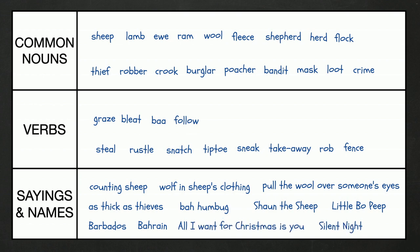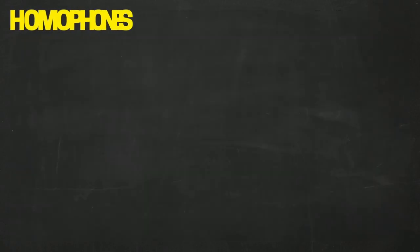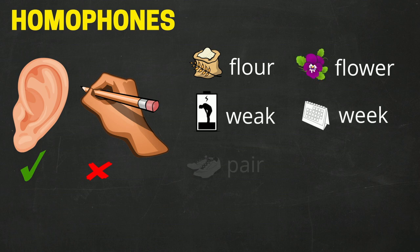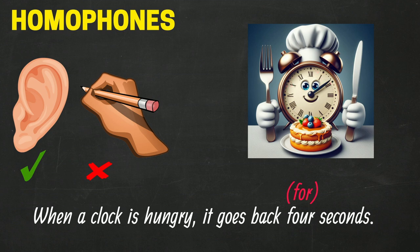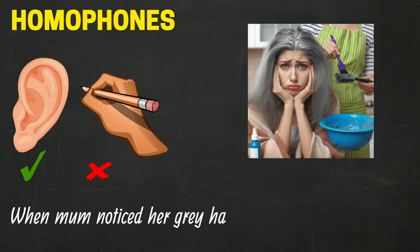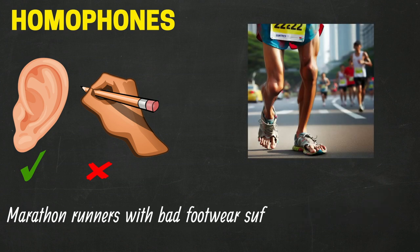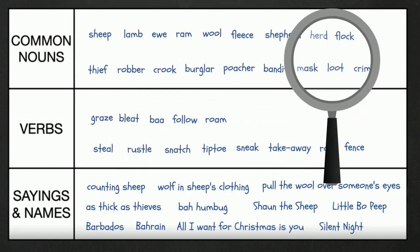We now have the ingredients to cook up a good pun. We'll begin by examining these words for homophones. When two words sound alike but are spelt differently and have different meanings, we call them homophones — like flower and flour, weak and week, and pear and pair. Puns often take advantage of these sneaky soundalikes to create clever and funny wordplay. When a clock is hungry, it goes back four seconds. When mum noticed her grey hair, she thought she'd dye. Marathon runners with bad footwear suffer the agony of de-feet.